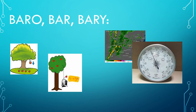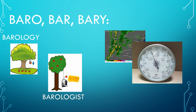Your first root is barrow, bar, or berry. Let's look at some words and see if you can figure out what this means. Barology is the study of gravity, and a barologist is someone who studies gravity. We have the picture of good old Isaac Newton getting hit on the head with an apple and coming up with his theory of gravity and inertia.